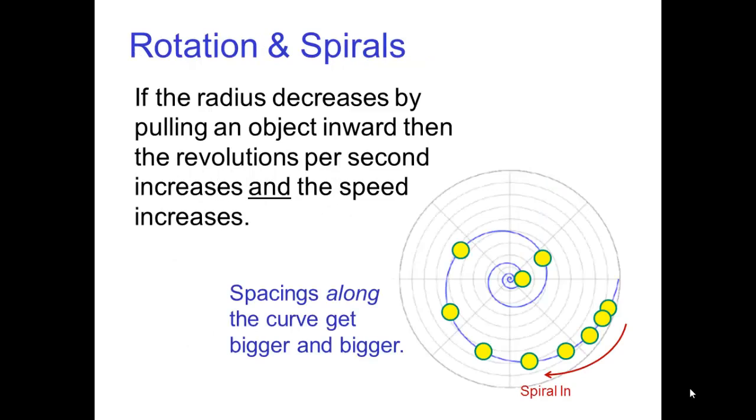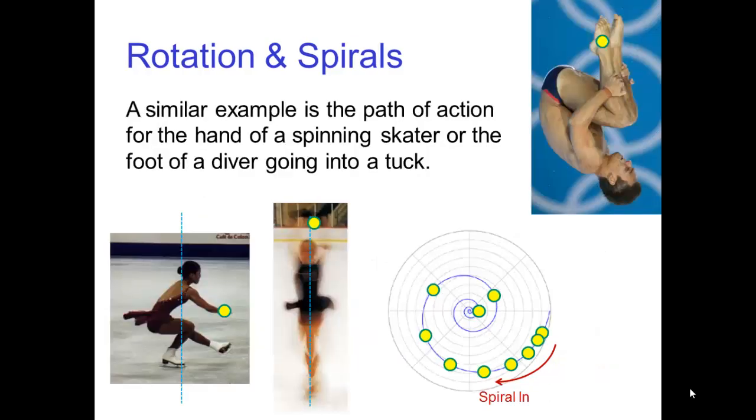That demonstration shows that if the radius decreases by pulling an object inward, then the revolutions per second increases, and also the speed increases. A similar example is the path of action for the hand of a spinning skater, or the foot of a diver going into a tuck.